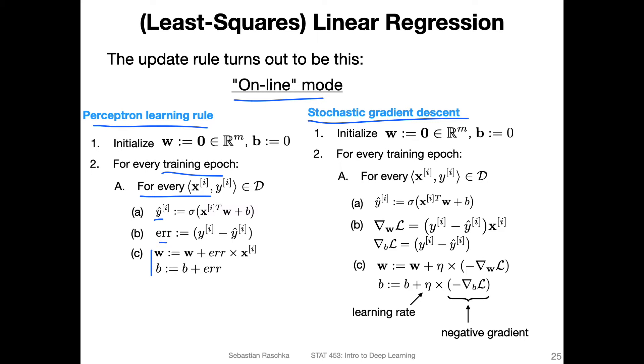So what is similar and what is different? We have the same weight initialization here. We also iterate over the training epochs. Then we also iterate over the training examples in a dataset. We also compute the predictions the same way. Because like I mentioned in the previous video, the perceptron and the linear regression model, they both compute the net input here. Except here, we have the threshold function in the perceptron.